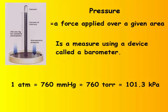Pressure is defined as a force supplied over a given area. It's measured using a device called a barometer. Some pressure conversions you need to know: 1 ATM, or atmosphere, is equal to 760 millimeters of mercury, which is equal to 760 torr, which is equal to 101.3 kPa.